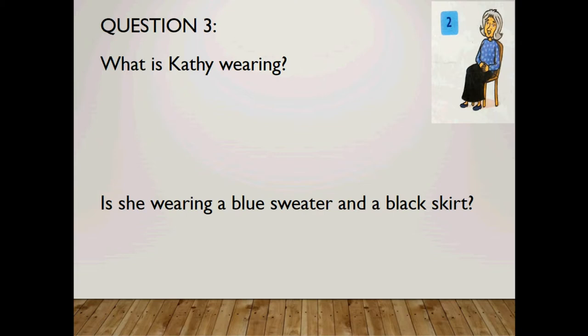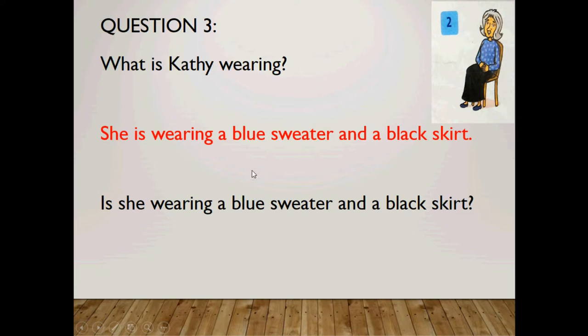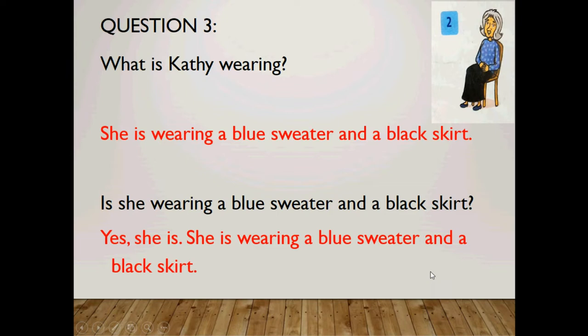Question number three. Let's talk about Kathy. What is Kathy wearing? As you can see: a blue sweater and a black skirt. So she is wearing a blue sweater and a black skirt. Sweater — one, so 'a blue sweater.' Skirt — only one, so 'a black skirt.' Yes/no question: Is she wearing a blue sweater and a black skirt? Pretty obvious. Yes, she is. She is wearing a blue sweater and a black skirt.